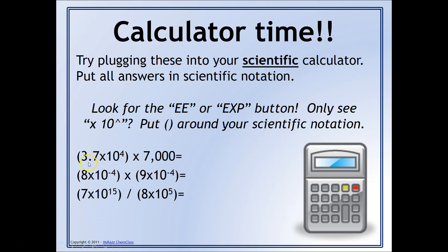Let's try the first example. If you're using the EE or EXP button, type in 3.7, then EE or EXP, then 4 — you do not type in times ten, because your calculator automatically assumes that whenever you use EE or EXP. There's also no need for parentheses. Then hit the multiplication sign and type 7,000. For anyone using times-ten-to-the-caret, type it exactly as shown with parentheses around it: (3.7 × 10^4). You should get 2.59 times ten to the eighth if you're doing this correctly.